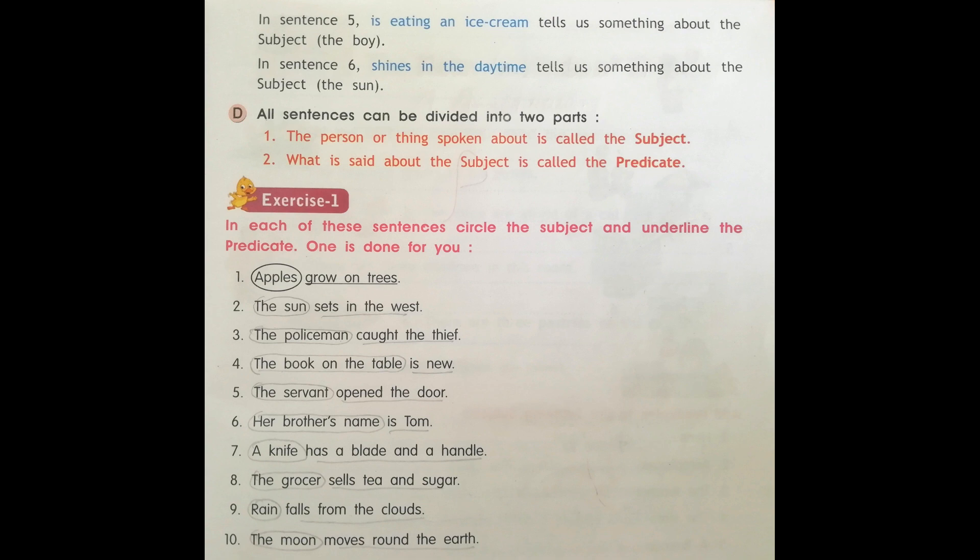Number four: The book on the table is new. What is the subject in this sentence? The book on the table. The predicate is: is new.